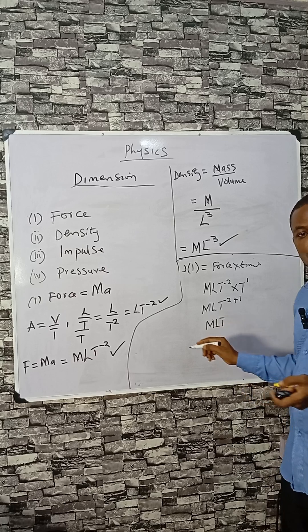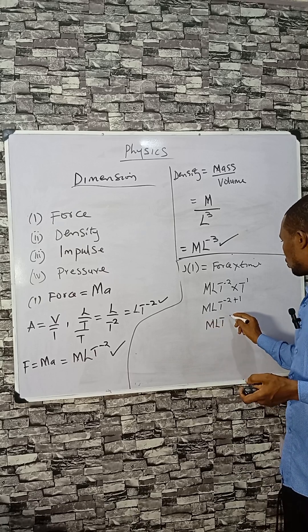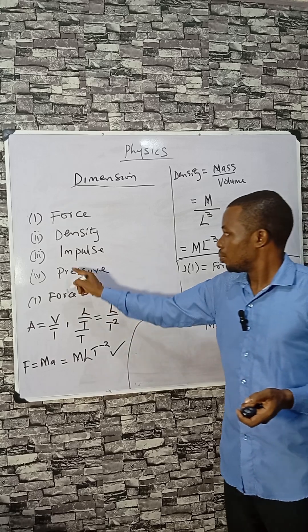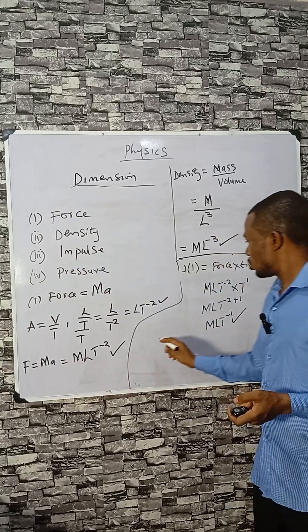Minus two plus one gives you minus one. This is the dimension for impulse. Let's do the one for pressure.